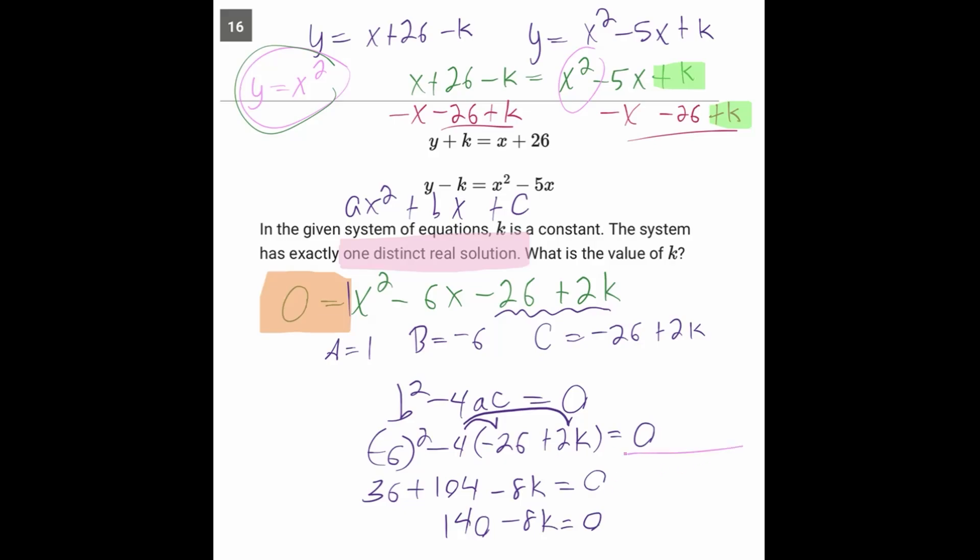Go ahead and add 8K to both sides and you'll have 140 equals 8K. And we can divide both sides by eight. We'll get 140 over eight, which simplifies to 35 over two. And that is our answer to this question.